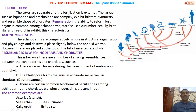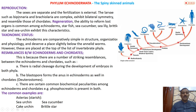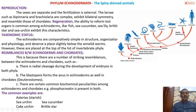Regarding reproduction: the sexes are separate - there are males and females - and fertilization is external. They release sperm and eggs into the water. Larval forms such as bipinnaria and brachiolaria exhibit bilateral symmetry. Their larval forms resemble those of chordates.